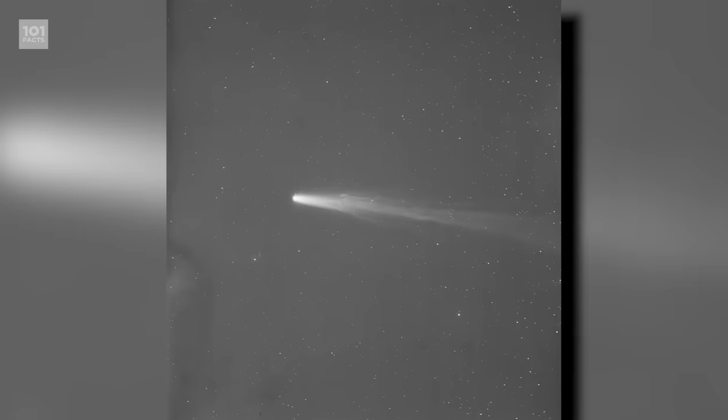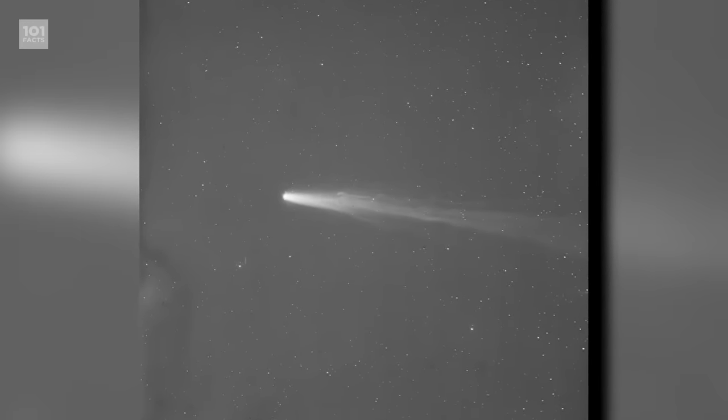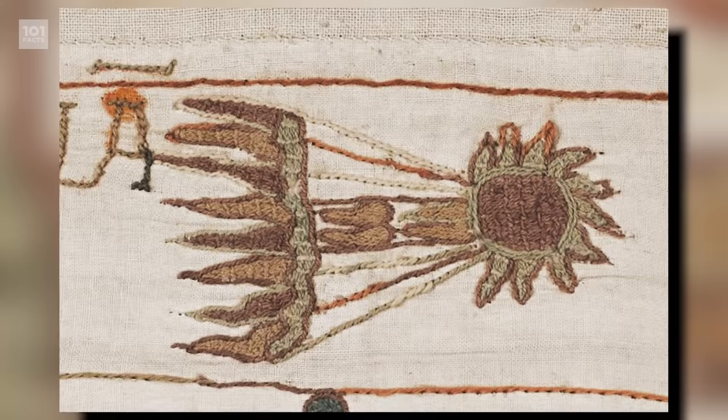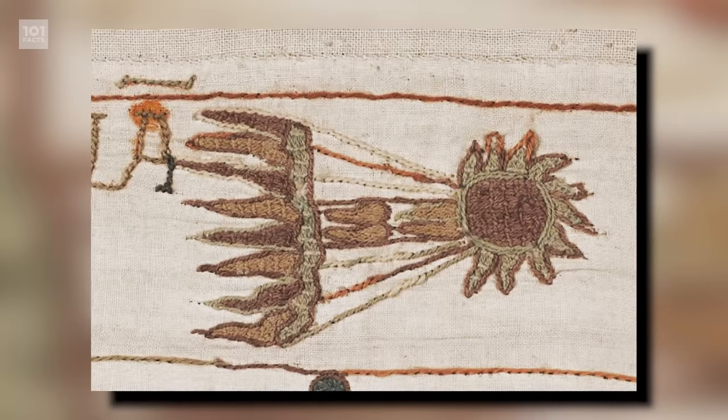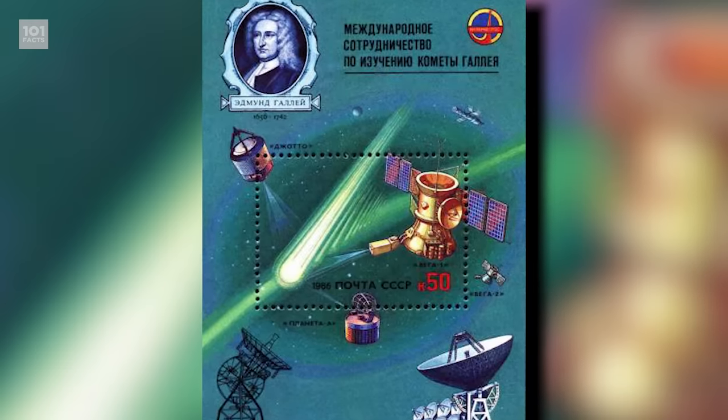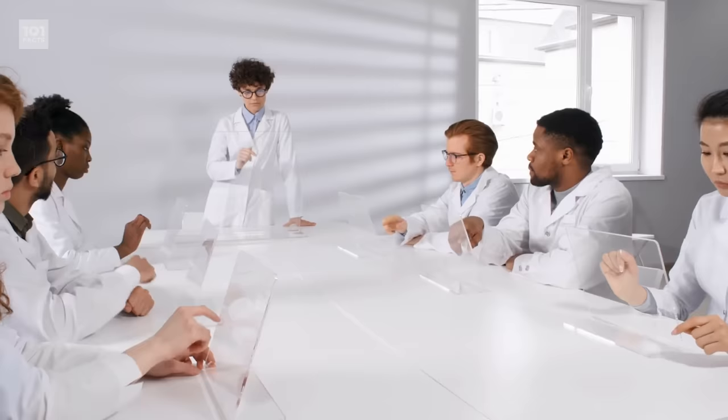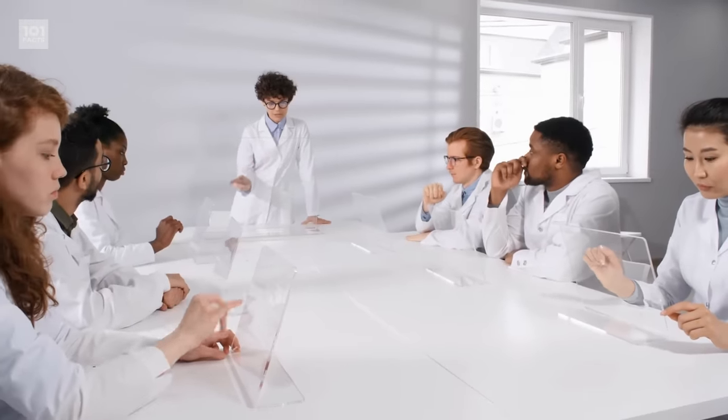Halley's Comet has been recorded since at least 1066, being documented on the Bayeux Tapestry. It's estimated that the comet has been on its current orbit anywhere between 16,000 to 200,000 years, but scientists haven't yet been able to narrow that down.